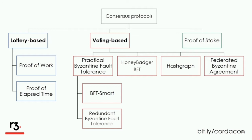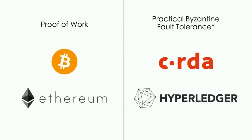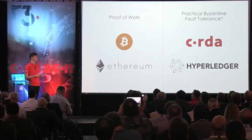In recent years with the proliferation of blockchain technology, there's been a lot of focus around designing better and more efficient consensus protocols. We commonly see two main families: lottery-based, where the creator of the new block is determined by chance, and voting-based, where members in the consensus network agree on new state explicitly. There's also proof of stake, a popular alternative to proof of work, but I'm going to focus today on proof of work and PBFT as famously used by Bitcoin, Ethereum, Corda, and Hyperledger Fabric.